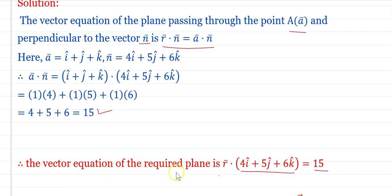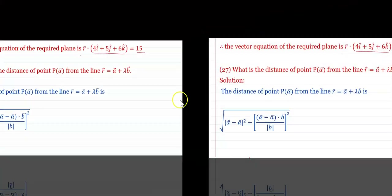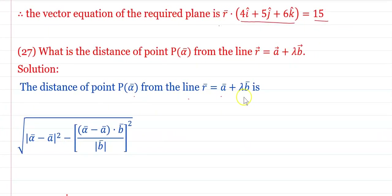What is the distance of the point P(ᾱ) from the line r̄ = ā + λb̄? The distance formula is: √(|ᾱ − ā|² − ((ᾱ − ā)·b̄ / |b̄|)²).